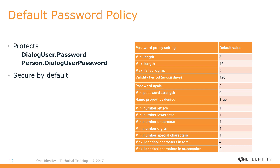After covering new password policies and the password reset web in the identity manager, it's time for more technical details. The default password policy protects exactly two passwords: the dialog user password, which is the password of a system user, and the person dialog user password, which is the dialog password of a person object on the Michelangelo tab. Passwords for other target systems are protected by other password policies.